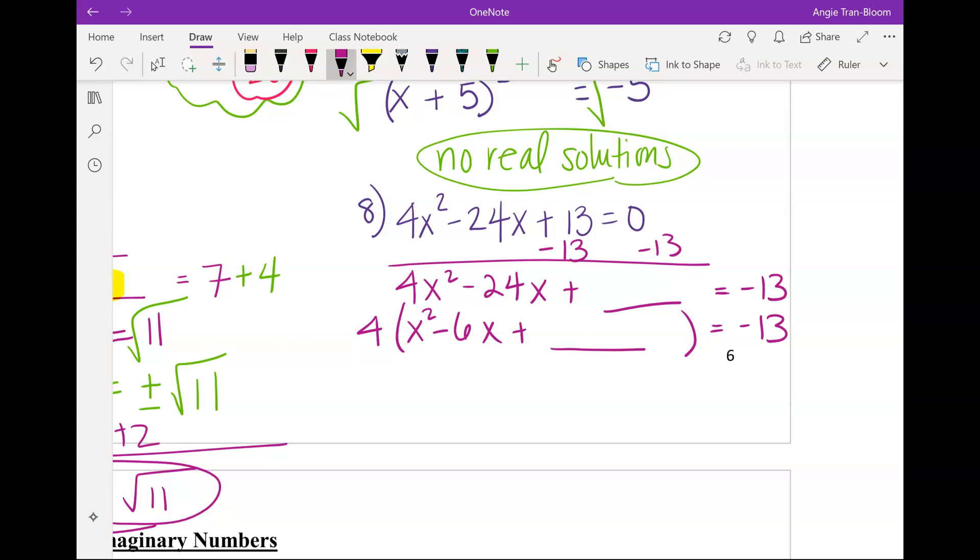Now, we do side work. What's your B value? Negative 6. Divide by 2. Negative 3. Square that for me. 9. So, we're going to add 9 to the left. But now, remember, we would add 9 here. But I want you to be super, super careful. On the left side, 9 is really being multiplied with what number? 4. So, on the right side, you also need to multiply that 9 by 4. This is the part where it's different when A is not 1.